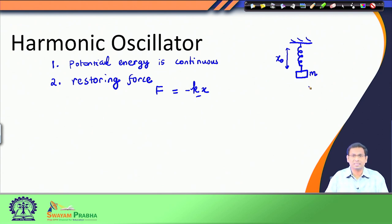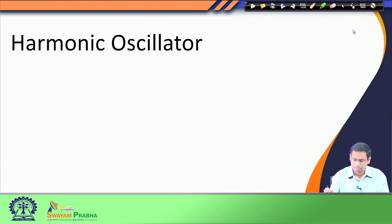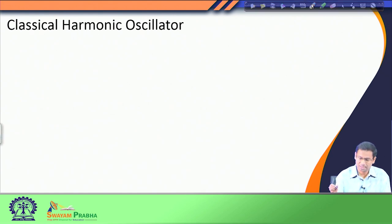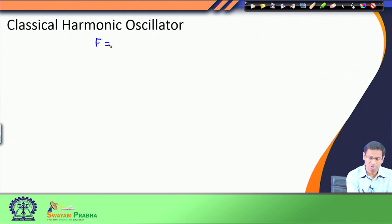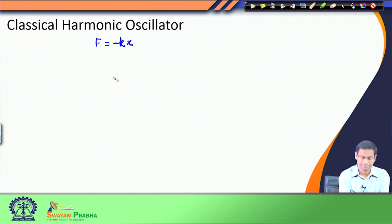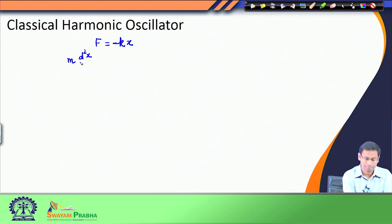Before discussing the harmonic oscillator problem in a quantum mechanical sense, let us refresh our knowledge on the classical mechanical solution of the harmonic oscillator. While discussing the classical harmonic oscillator, we start with the equation that the restoring force equals negative of force constant k times x. From Newton's equation of motion, force equals mass times acceleration. So I can write down a differential equation.